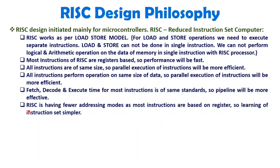RISC architecture supports very few addressing modes, because it is based on load and store. If you see CISC architecture, it is not based on load and store, and because of that it has many addressing modes. But RISC architecture has very few addressing modes. As it has very few addressing modes, you can have the same size of instructions, which are mostly register-based, so parallel execution is easy, pipelining is very effective, and learning the instruction set is even simpler.